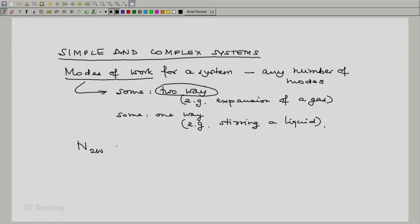Let us call this N2W, which represents the number of two-way work modes possible for a system.